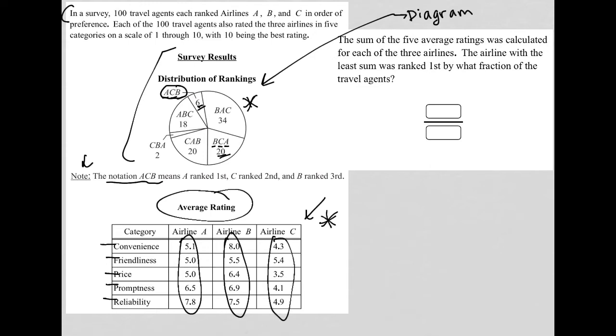The next sentence says the airline with the least sum was ranked first by what fraction of the travel agents? OK, so which one of these airlines has the least sum? So what I'm going to do is a comparison. You could just go straight to your calculator and add everything up, get a sum here, a sum there and a sum here and just figure out which is the least.